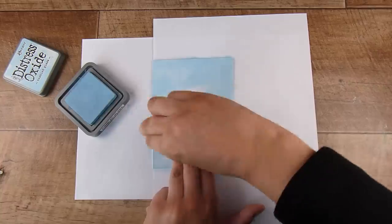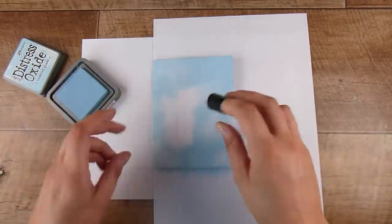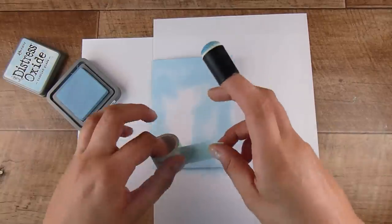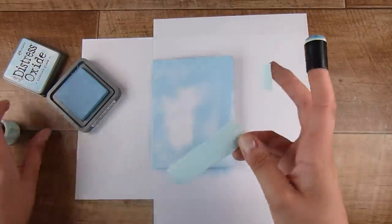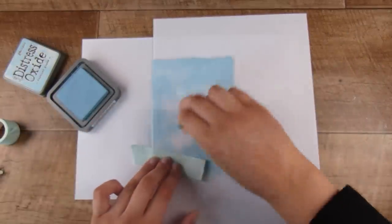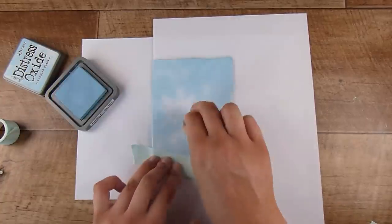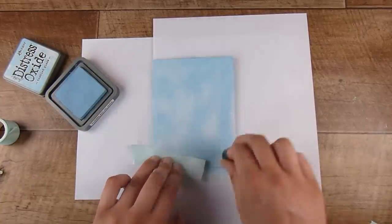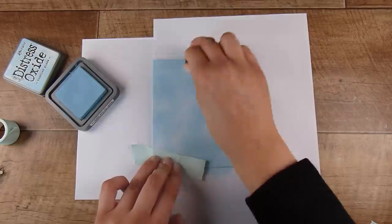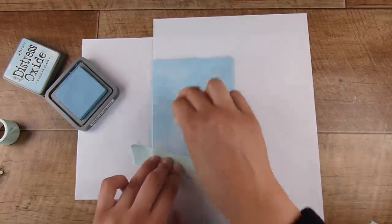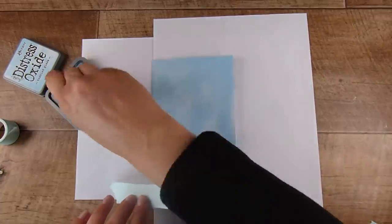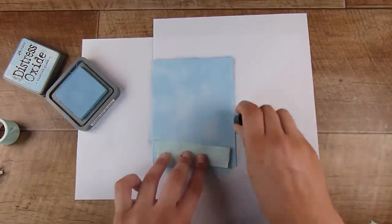This background does not need to be perfectly ink blended and smooth. I'm just getting the ink on there. I am protecting the back of my card base because I never want color on the back. You can see this is not perfect at all, not a smooth layer of ink, but I was just enjoying putting it down.